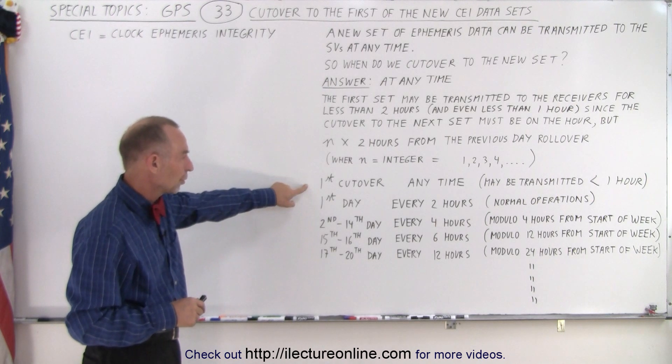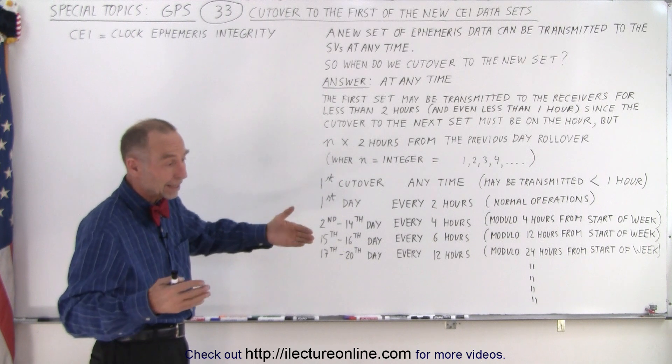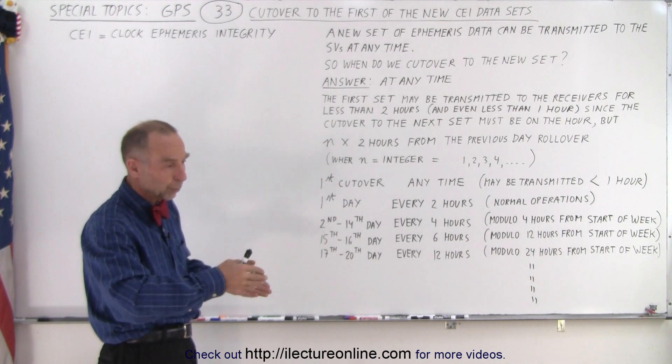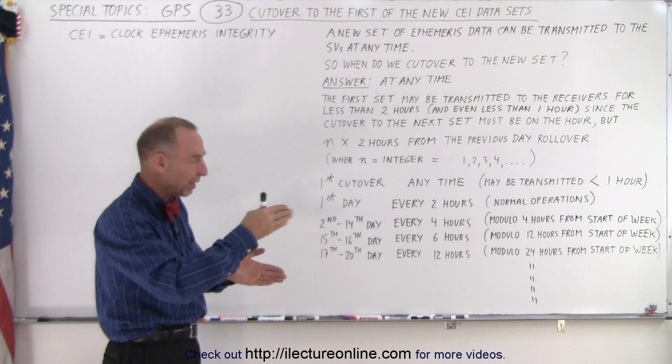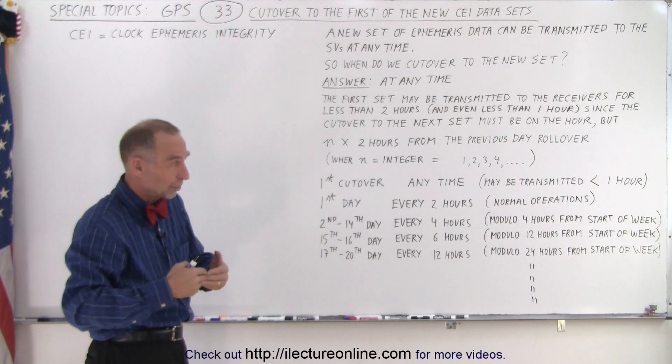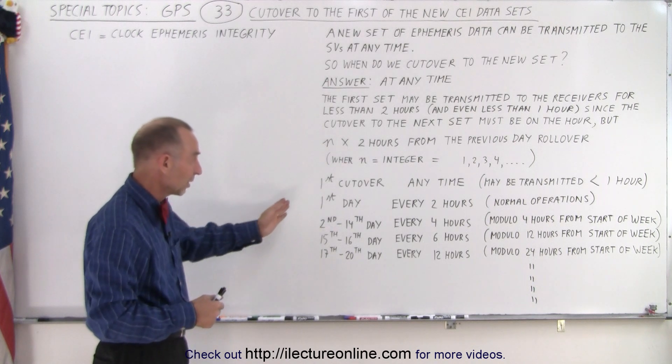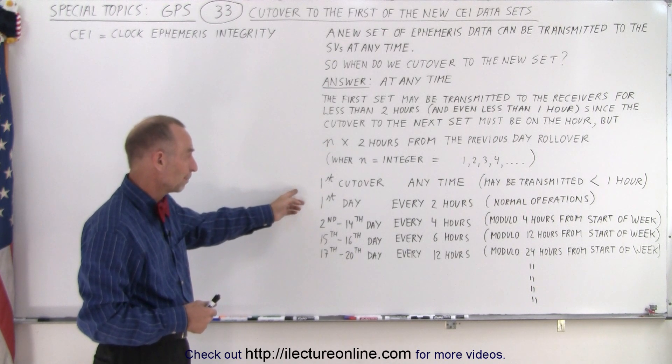So the first cut over is at any time, maybe transmitted for less than an hour, which would indicate that when you get to the interval where it's n times two hours past midnight, you want to jump over. But if it's not so that you might want to go an hour and a half or an hour and 15 minutes before that two-hour period comes in, then you cut over to the next one.